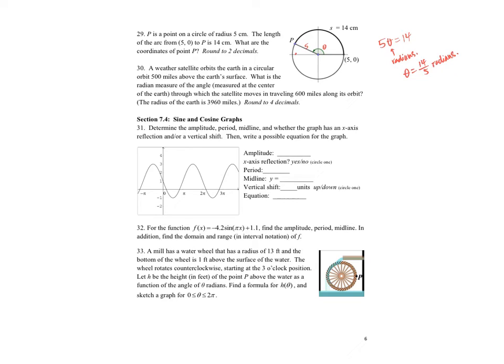So then I can find the coordinates. I know that the X is going to be equal to R times cosine theta, which is 5 times cosine of 14 over 5. And then Y is going to be R sine theta. So that's 5 times sine of 14 over 5. And when I compute this, I just need to make sure that I'm in radian mode.